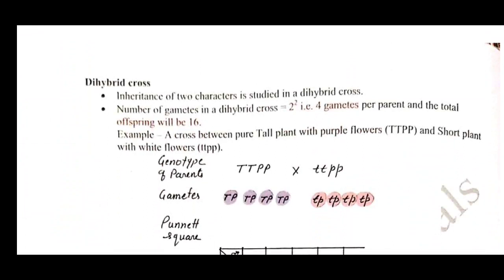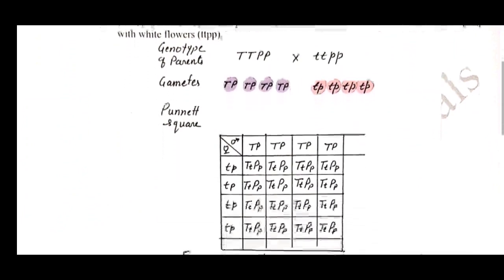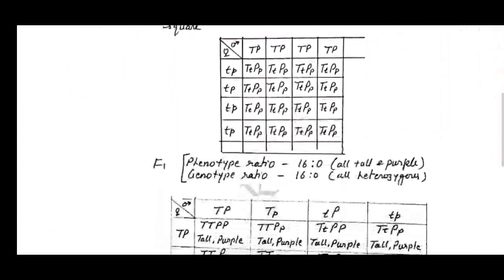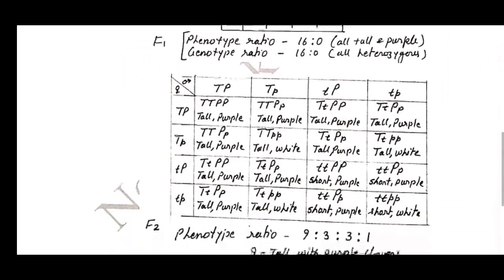Moving to page number six, we have the Dihybrid Cross, in which the Punnett square is also given and the ratio obtained is presented in the form of a handmade table by Dr. Neela Bakuri.